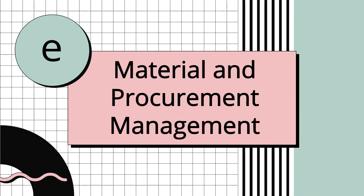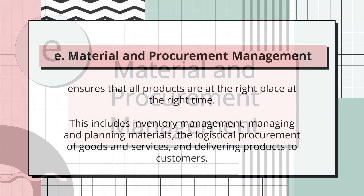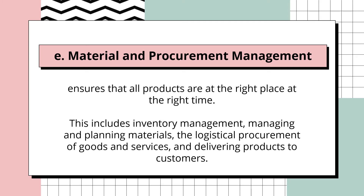The next functional area is material and procurement management. Material and procurement management ensures that all products are at the right place at the right time. This includes inventory management, managing and planning materials, logistical procurement of goods and services, and delivering products to customers — covering everything from the supplier all the way to the delivery of goods to customers.